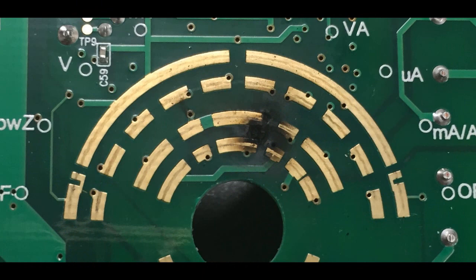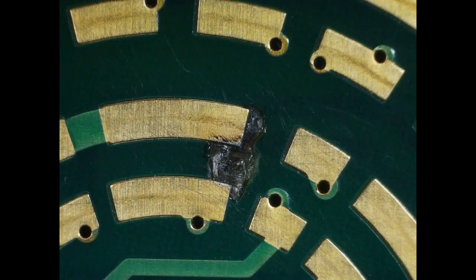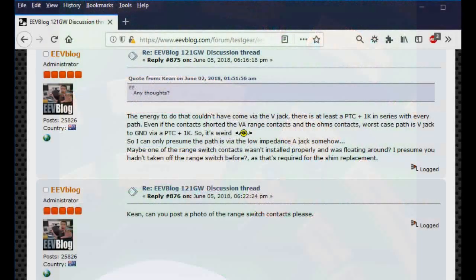So they show some pictures of the damaged area. So Dave's been working with this person to try to identify what actually happened. In one of Dave's posts he says the energy to do that couldn't have come from the V jack. There's at least a PTC and a 1k in series with every path, even if the contact shorted. In the VA range contacts and in the ohms contacts, worst case path would be the V to ground via the PTC plus the 1k.